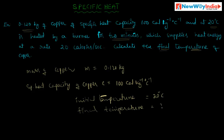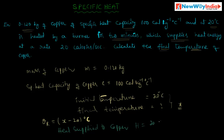Let the final temperature be x, then the rise in temperature is x minus 20 degree centigrade. The heat supplied to copper is H equal to 20 calories per second into 2 minutes, that means into 120 seconds. So we get H is equal to 2400 calories.